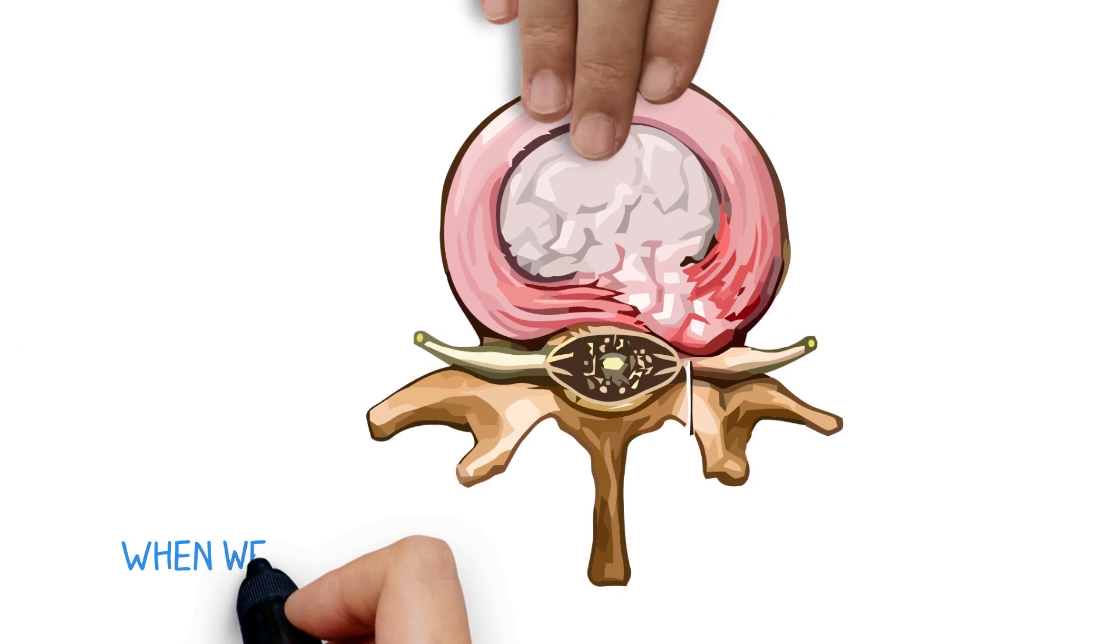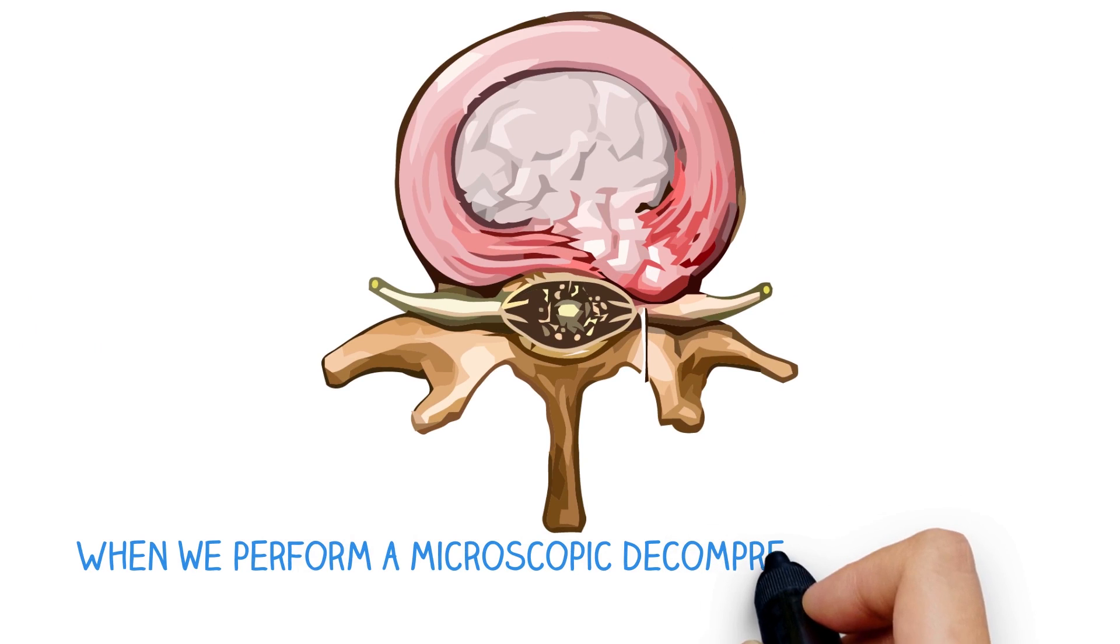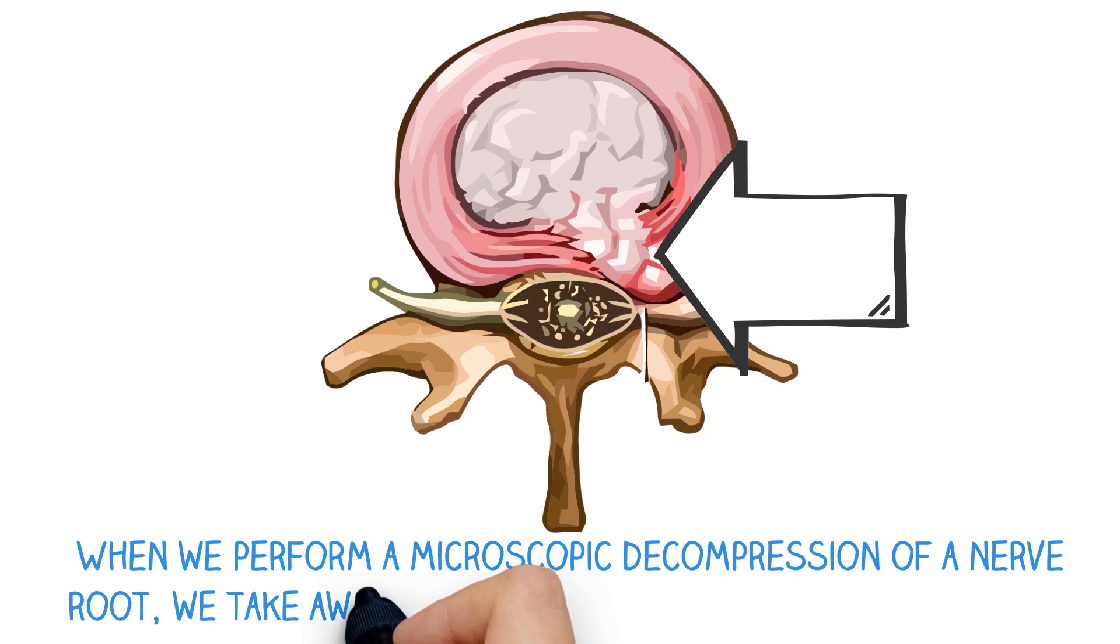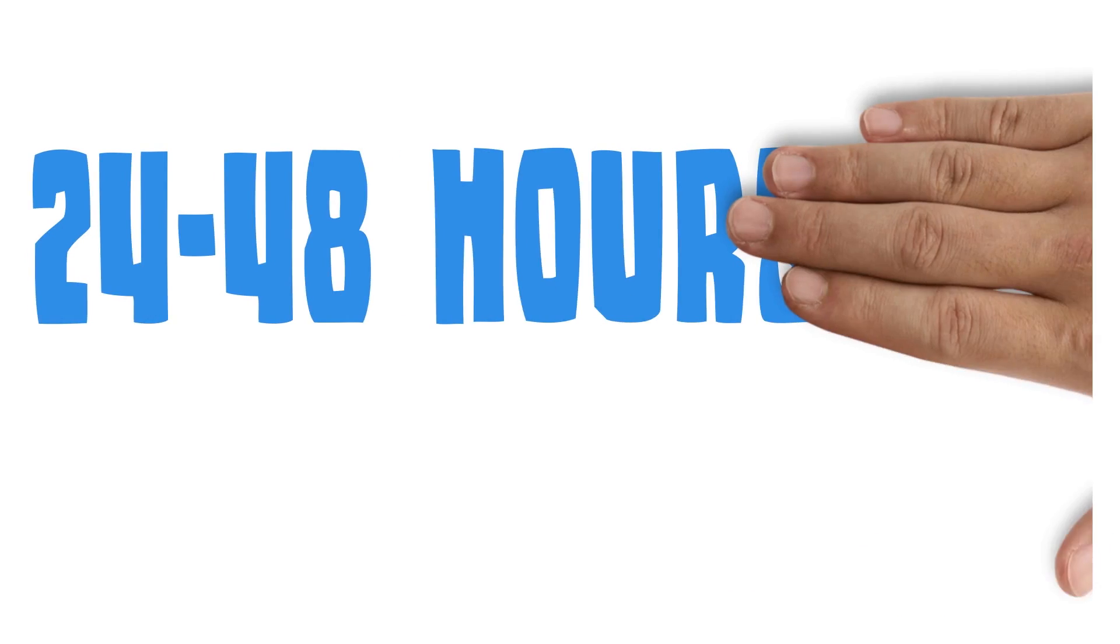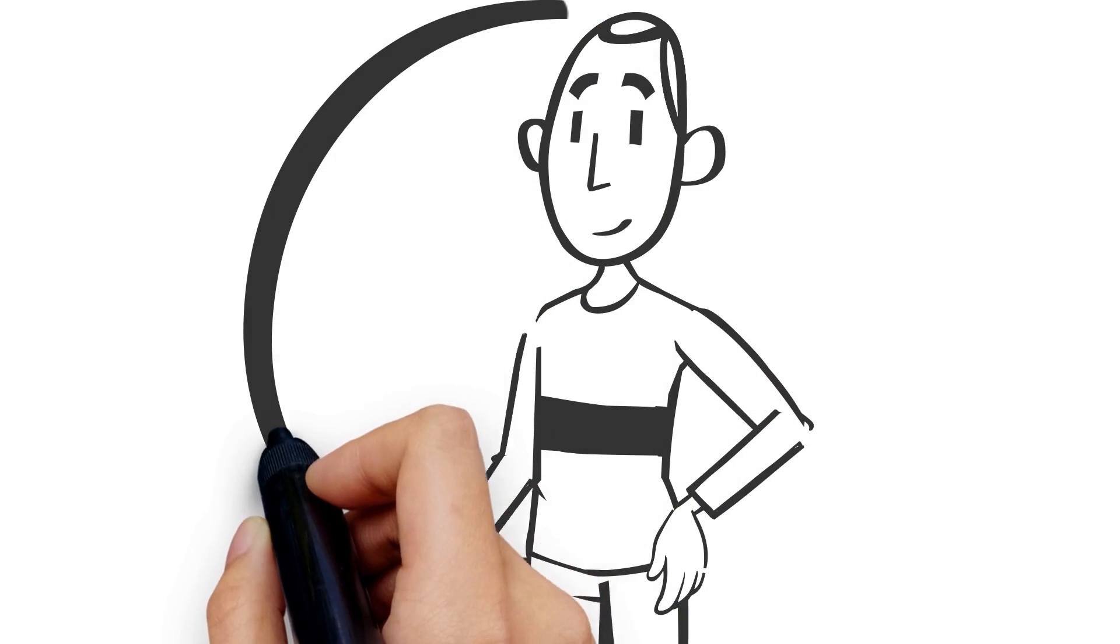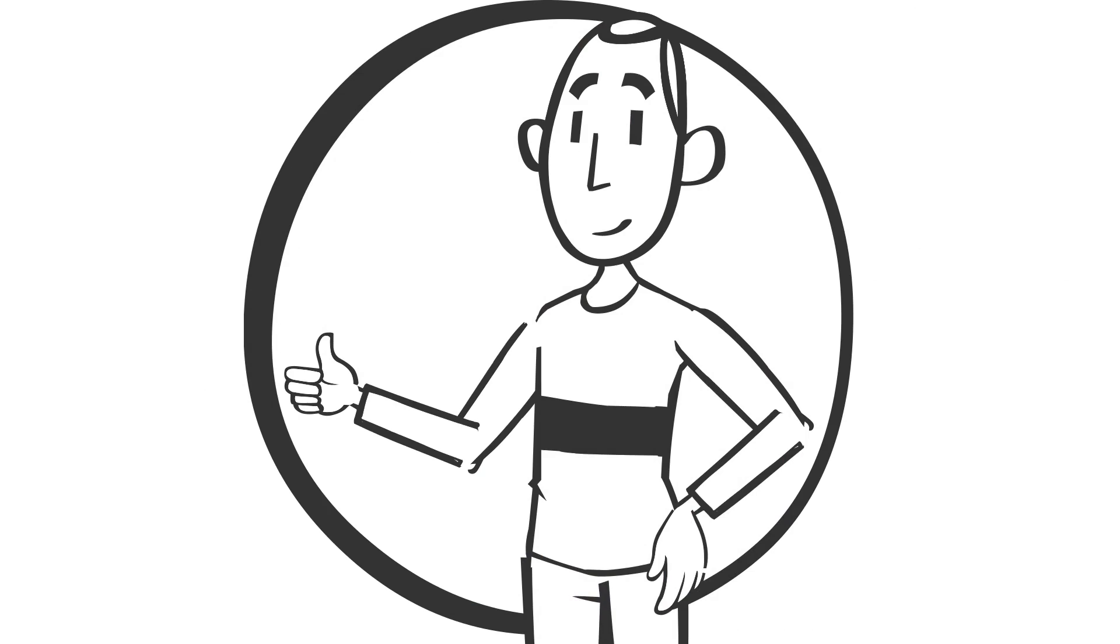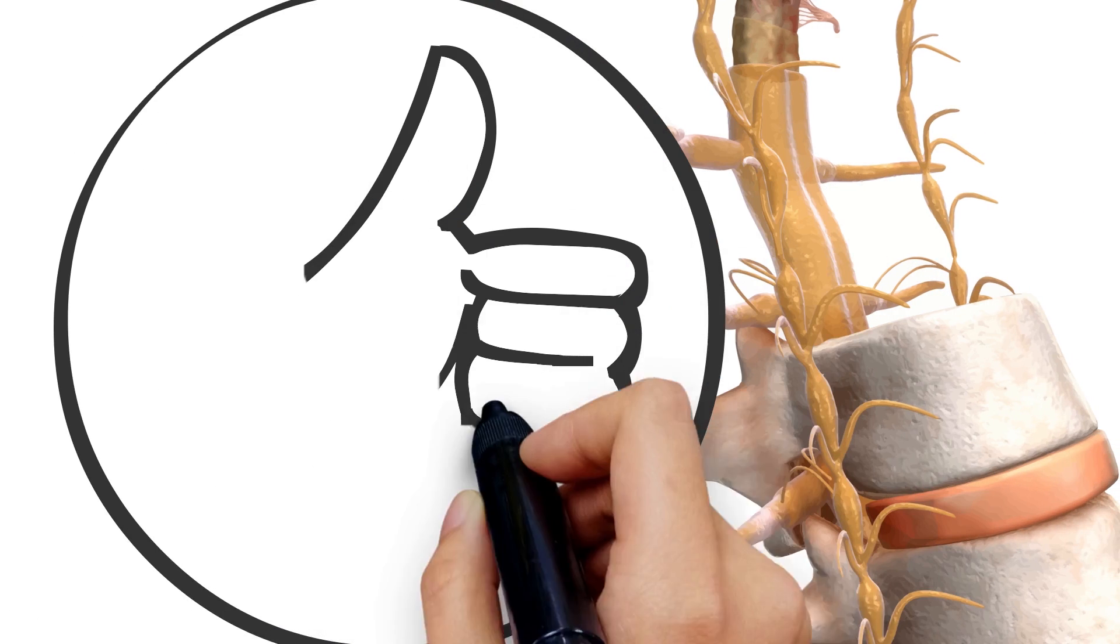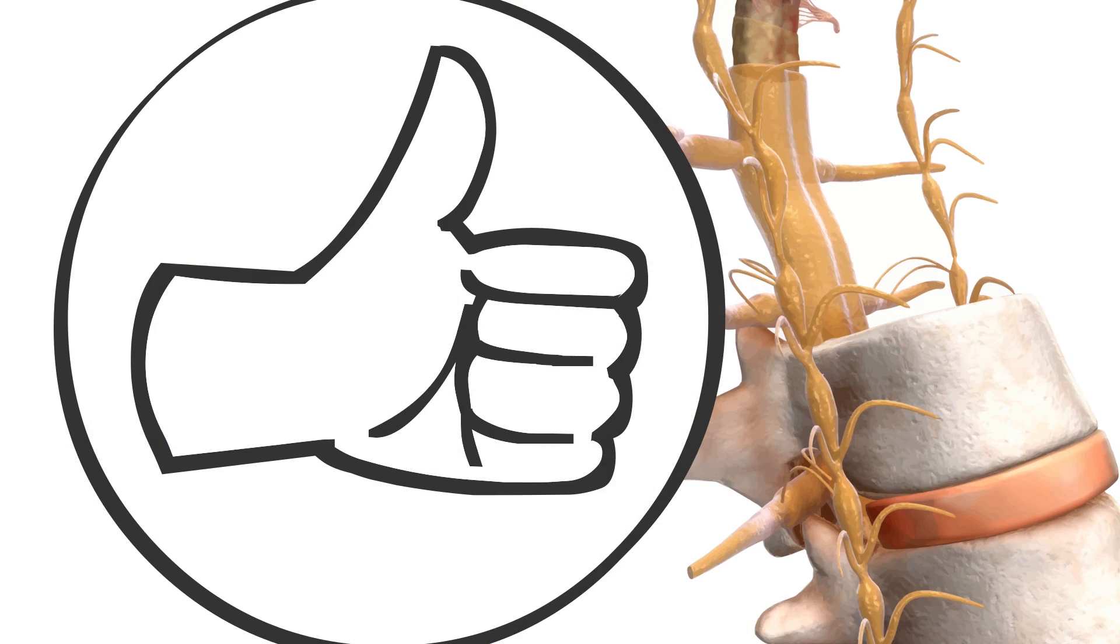Nerve root pain after surgery. When we perform a microscopic decompression of a nerve root, we take away the pressure that has been causing pain. For the first 24 or 48 hours after surgery, the nerve root usually feels great. It's finally free for the first time in months or years.